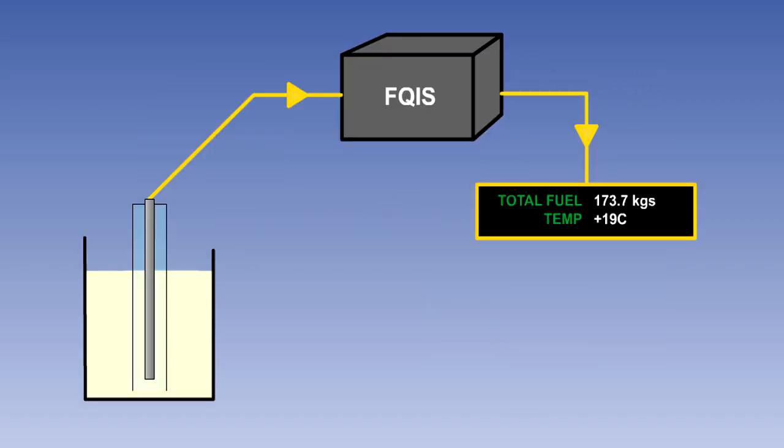On more modern aircraft, the digital gauges are controlled by a fuel quantity indicating system or FQIS computer. This computer monitors the system for any failures and generates appropriate warnings.